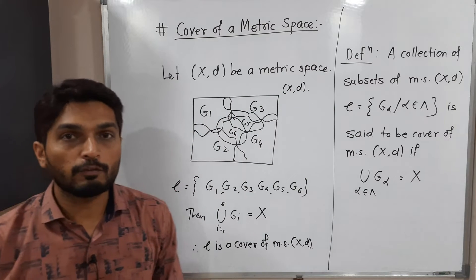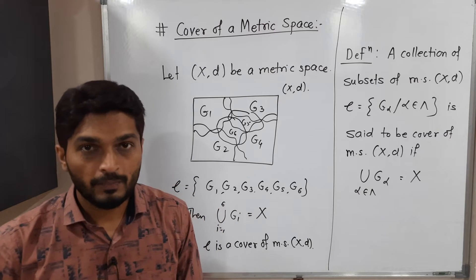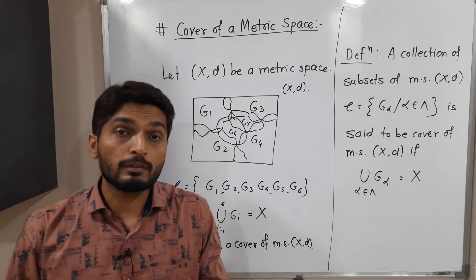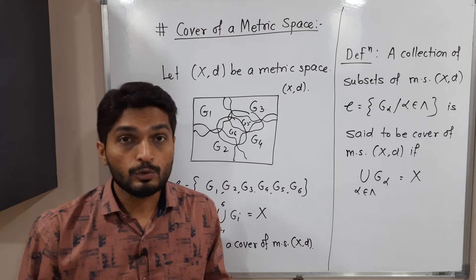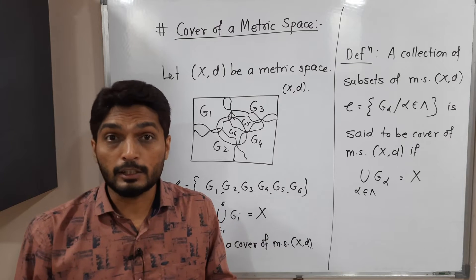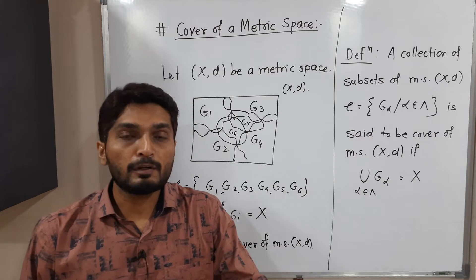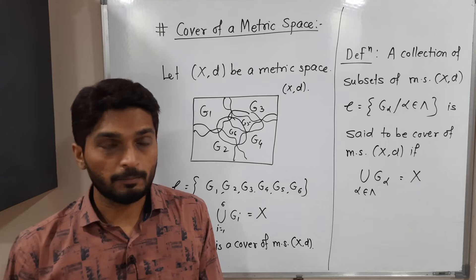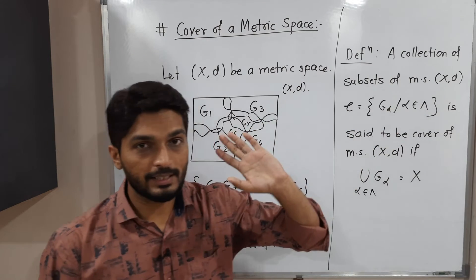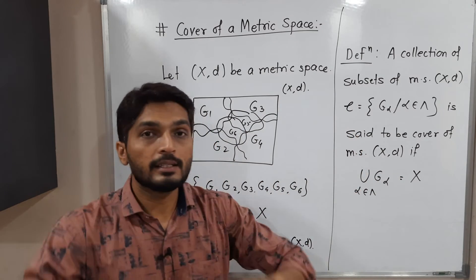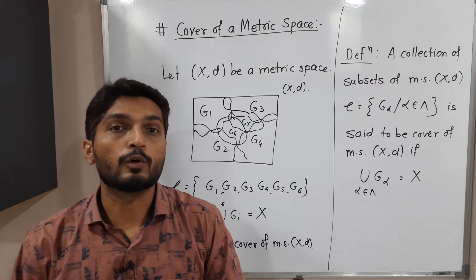Here I have taken G_alpha, alpha belongs to lambda. In this example we had taken only six sets. But it is not compulsory that each and every time we will have a finite collection to cover the entire metric space X, D. In some cases, an infinite collection is required. So lambda can be a finite set or an infinite set. Their union is the entire metric space X, D — then we say it is a cover of metric space X, D.